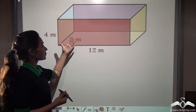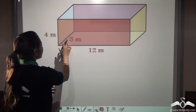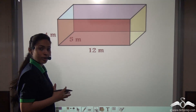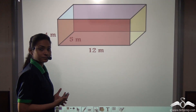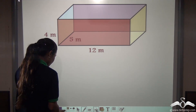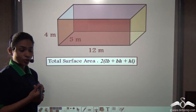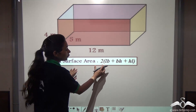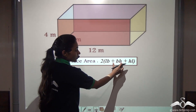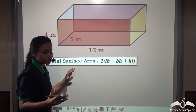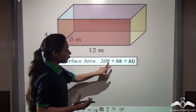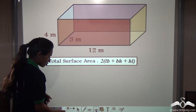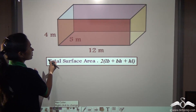You can see this is a cuboid with the dimensions 4 metres, 5 metres and 12 metres. Now you know how to find out the total surface area of a cuboid, so find it out yourself. The total surface area of a cuboid can be found with the formula 2(LB + BH + HL), where L represents length, B represents breadth and H represents height of a cuboid. So let's solve this with the dimensions given.